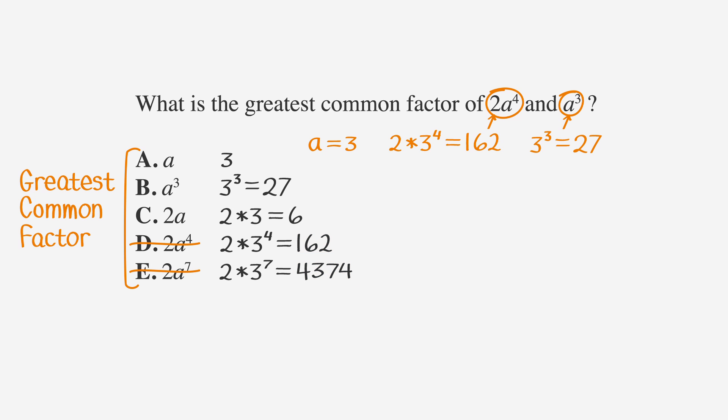Now, since we're looking for the biggest possible number that will go into both, let's try answer choice b, 27, since that's our biggest remaining answer choice. To test if 27 is a factor of both numbers, we just need to see if it'll go into both evenly. Well, since 27 divided by itself is 1, that should work. And since 162 divided by 27 is 6, that works as well.